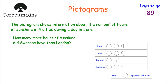Now let's have a look at pictograms, which are another way to represent information. Here we've got a pictogram showing the number of hours of sunshine in four cities — Paris, Cork, London and Swansea — on one particular day in June. The key says each circle represents four hours. So Cork has 3 full circles: 4, 8, 12 hours of sunshine.